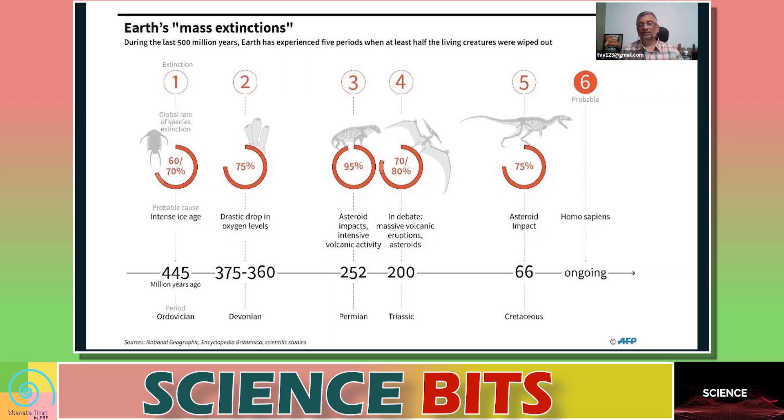And then you had the fourth mass extinction around 200 million years ago. And then the last one was about 66 million years ago, which was caused by asteroid. That's what made the dinosaurs go extinct. That time around 75 percent of the species vanished.